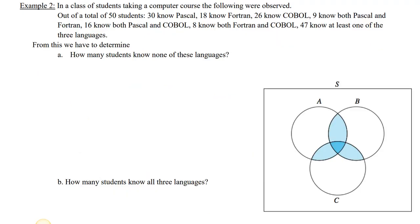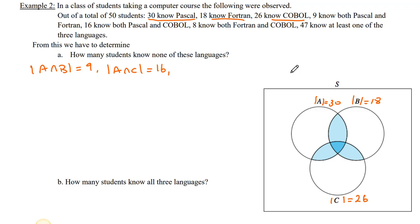Let's see an example. In a class of students taking computer courses, 30 know Pascal (set A), 18 know Fortran (set B), and 26 know COBOL (set C). Nine students know both Pascal and Fortran, so |A∩B| = 9. Sixteen know both Pascal and COBOL, so |A∩C| = 16. Eight know both Fortran and COBOL, so |B∩C| = 8. And 47 know at least one of the three languages, so |A∪B∪C| = 47.